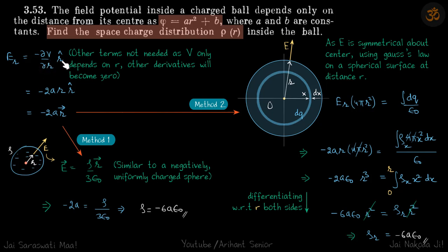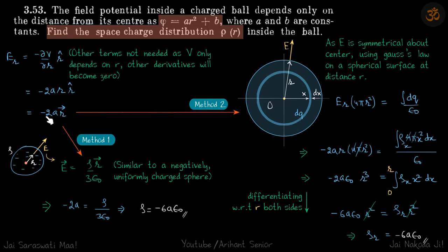Let's find the electric field first. We use the standard result E = −∂V/∂r r̂. We don't need other terms since V only depends on r — if there were a theta component, ∂V/∂θ would be zero because V does not depend on theta. Substituting the value of V, we get E_r = −2ar r̂, which gives us E = −2a r⃗.